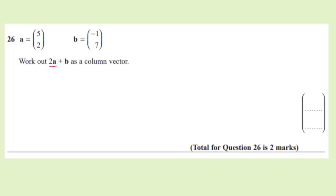So we need to multiply column vector a by 2 first. So 2 times 5 and 2. And we're adding b to it, which is minus 1 and 7. So 2 times 5 is 10, and 2 times 2 is 4. And we're adding minus 1 and 7.